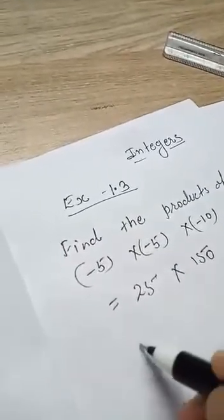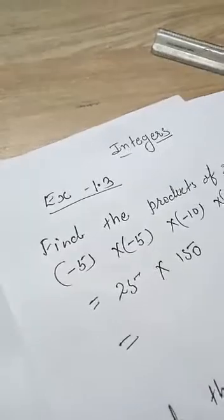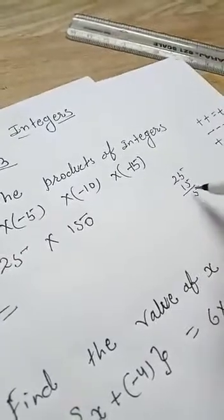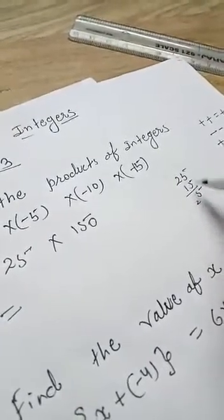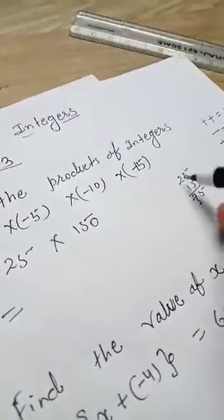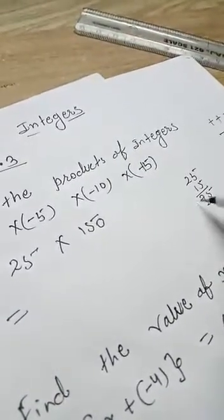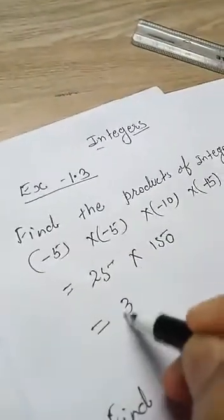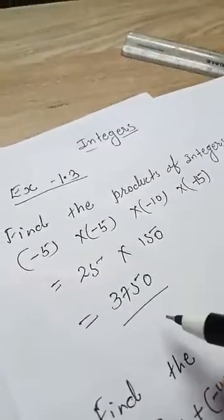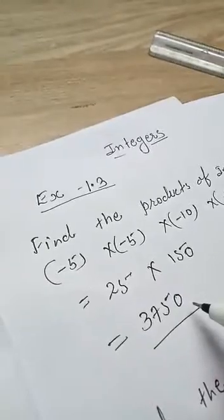Simple multiplication: 25 multiply 15. 5 fives are 25, carry 2. 5 times 1 is 5 plus 2 equals 7. In Vedic maths, 2 plus 1 is 3. So 375 and 0, your answer completed: 3750.